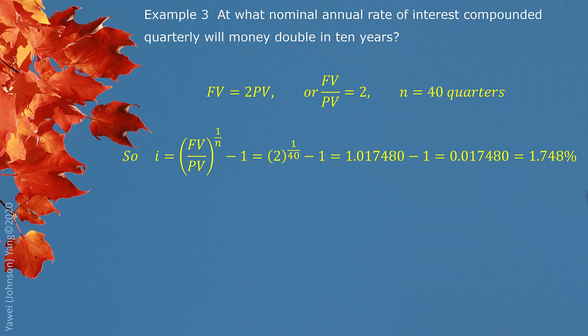Put them all in the formula. We notice that the formula directly relates to the ratio of future value and present value. So we do not need to know the real value of future value and present value. We know the ratio to directly plug in. We can get 1.748%.